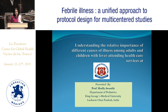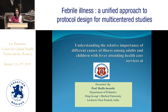There are 29 states in the country and seven union territories. Each state in the country is broken up into districts, and these districts have an average population of approximately 3 to 4 million people.